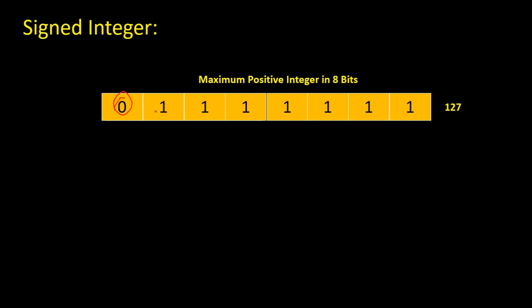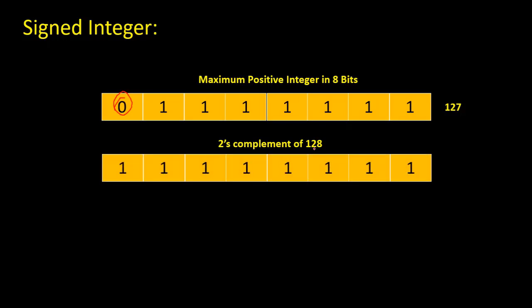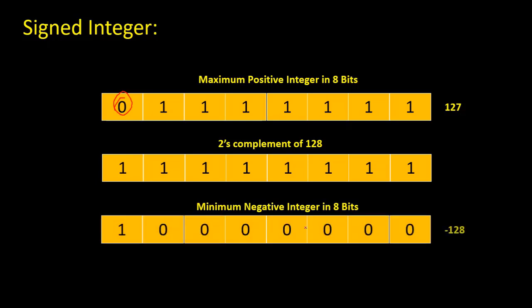This is the maximum positive integer we can store in eight bits. Now let's calculate the two's complement of this integer 128. This is the two's complement of 128 and the minimum negative integer we can store in eight bits. This integer is equivalent to minus 128, and this binary number will be represented in computer memory like this. Here, one means this is a negative integer.